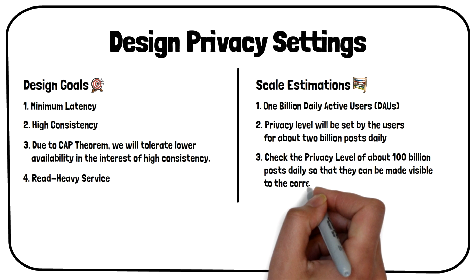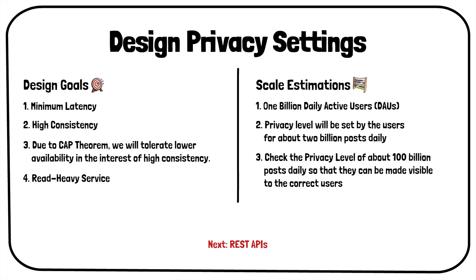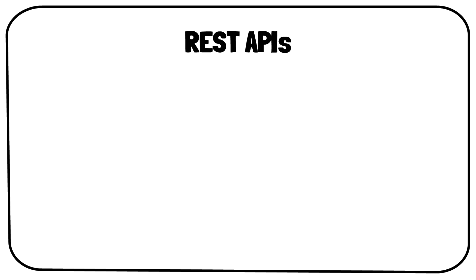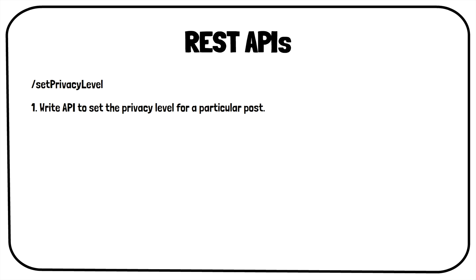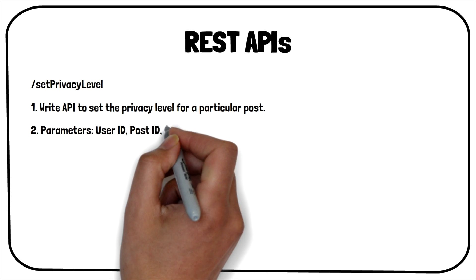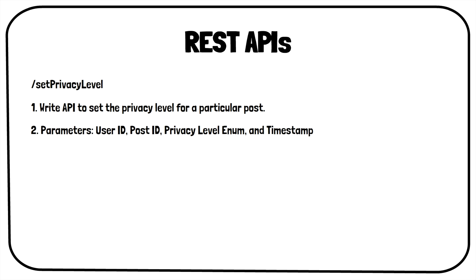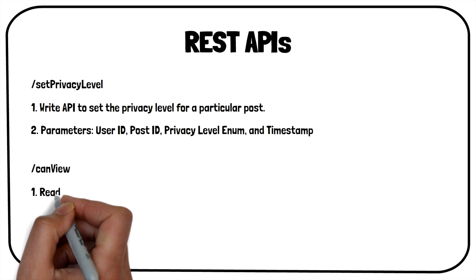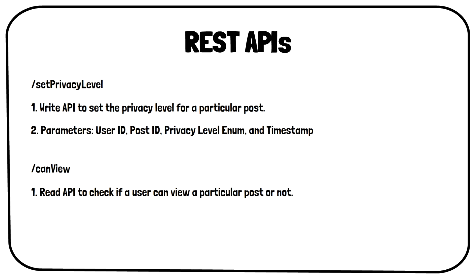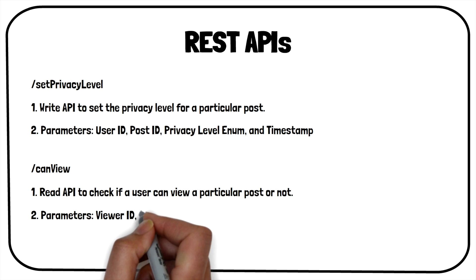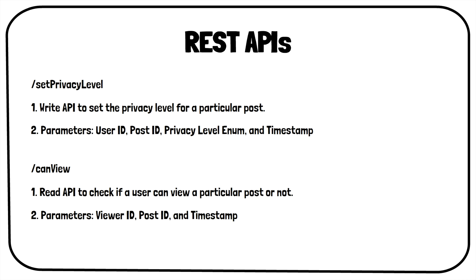Now let us discuss the REST APIs we will be developing. We will need two REST APIs. The first is the set privacy level API — a write API to set the privacy level for a particular post. The client will send user ID, post ID, privacy level enum, and timestamp as request parameters. The second is the can-view API — a read API to check if a user can view a particular post, requiring viewer ID, post ID, and timestamp.